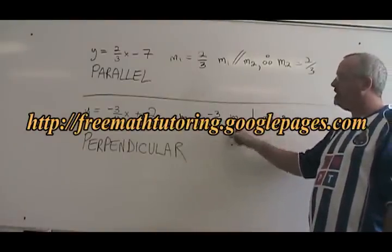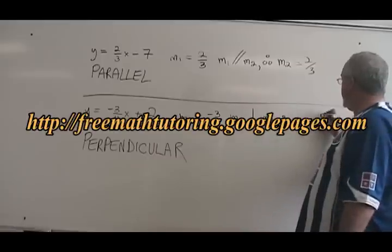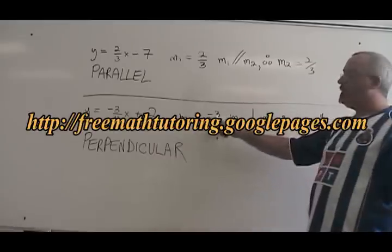What that means is we take the fraction form of m1 and we turn it upside down and we change its sign.